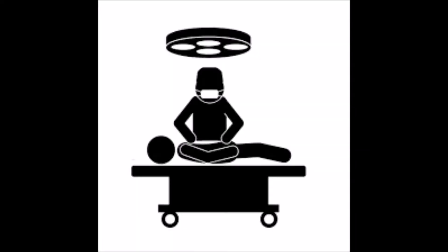Here's the example that Frankfurt uses — call it the evil neuroscientist example. Imagine that an evil neuroscientist, unbeknownst to you, has implanted a series of microchips in your brain. Maybe it happened, for all you know, during your last dentist appointment when the dentist put you under. In any case, by pressing certain buttons, the evil neuroscientist can make you do whatever she wants you to do. You're effectively a puppet.